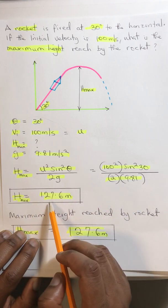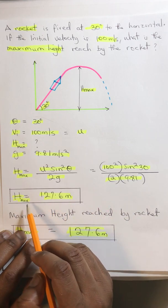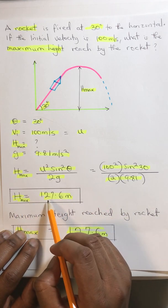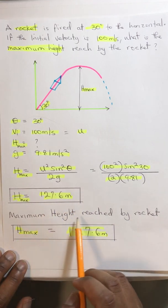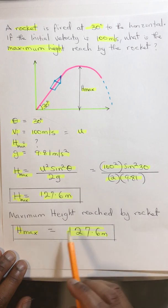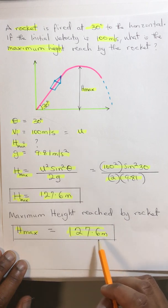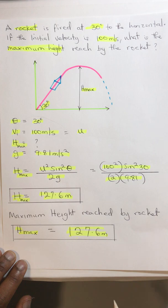Therefore, we have our maximum height equals 127.6 meters. So we have our maximum height reached by the rocket which equals 127.6 meters. Thank you very much.